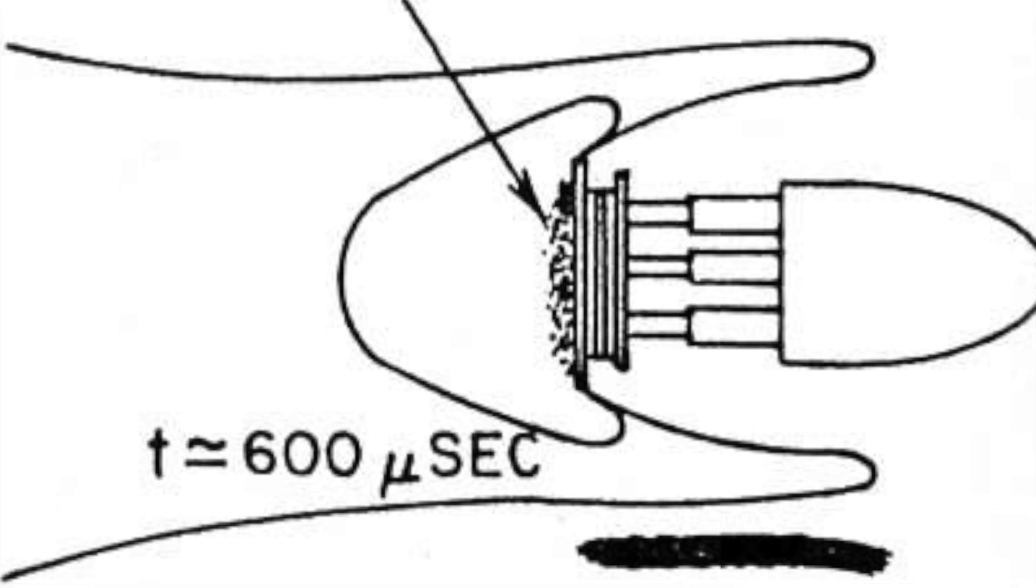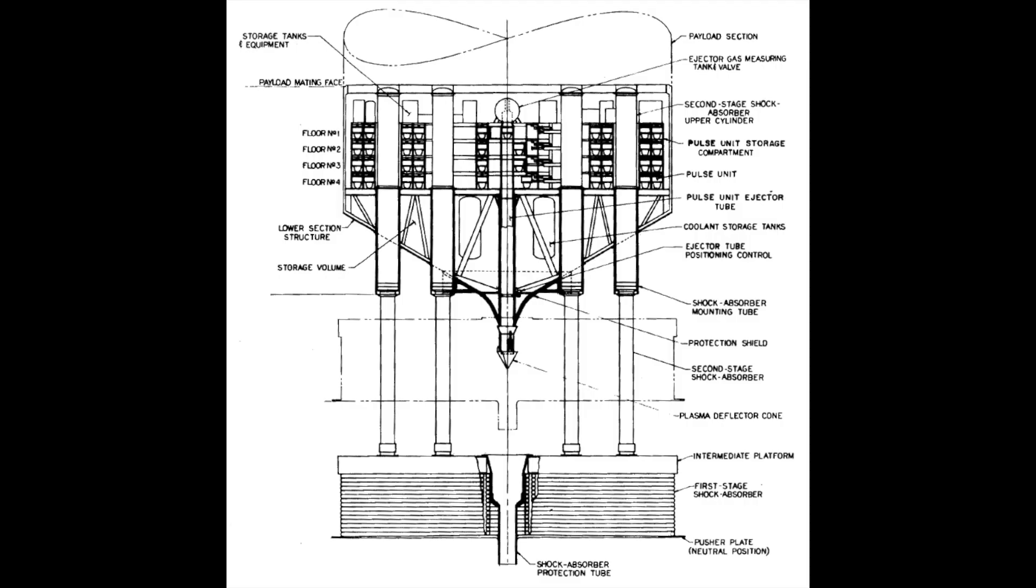A massive super-orion design, weighing 8 million tons, was contemplated, potentially serving as an interstellar arc. This design was theoretically feasible with the materials and techniques available at the time.